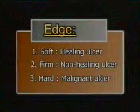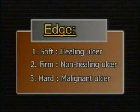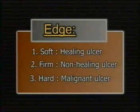Note the tenderness over the surrounding area. Warmth and tenderness are suggestive of inflammation, seen in acutely inflamed and spreading ulcers. Now palpate with a gloved hand over the edge and floor of the ulcer. The edge is barely distinguishable in a healing ulcer. In a non-healing ulcer it has a firm feel due to fibrosis, while in a malignant ulcer the edge is hard.